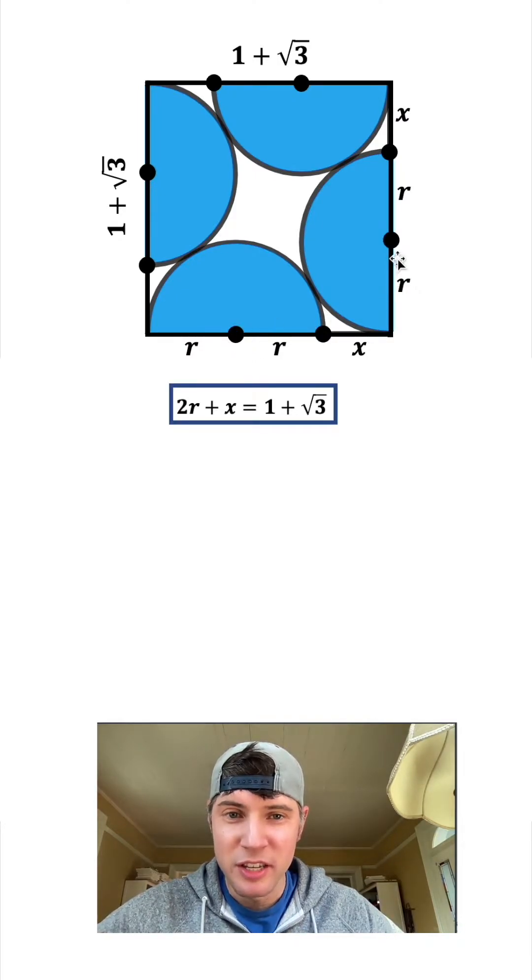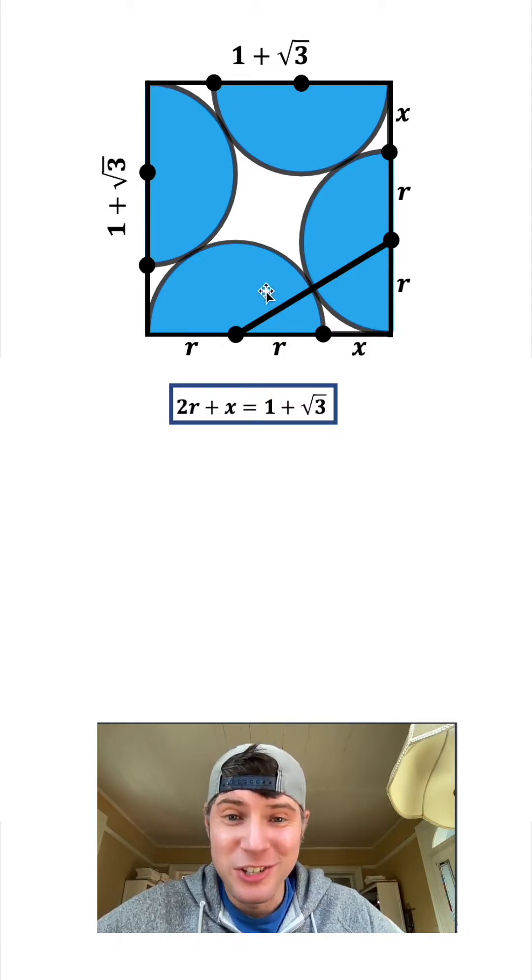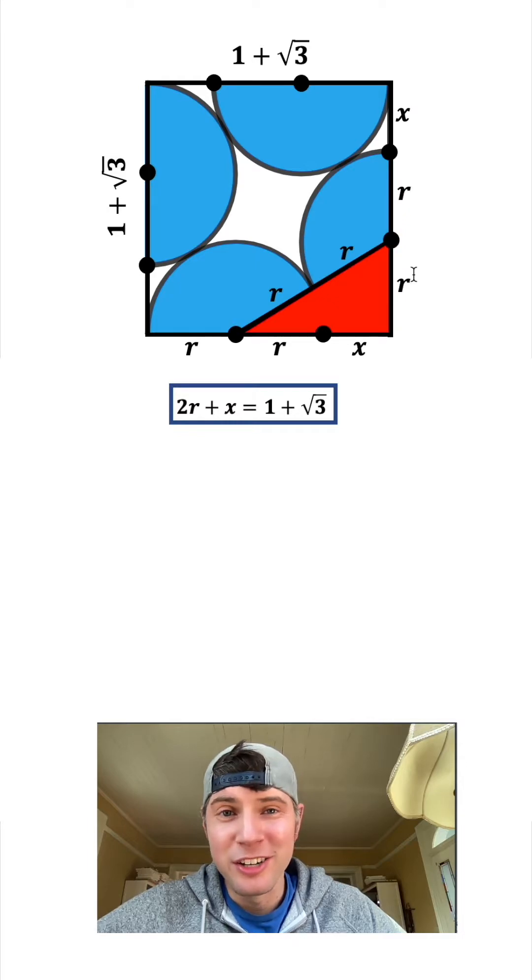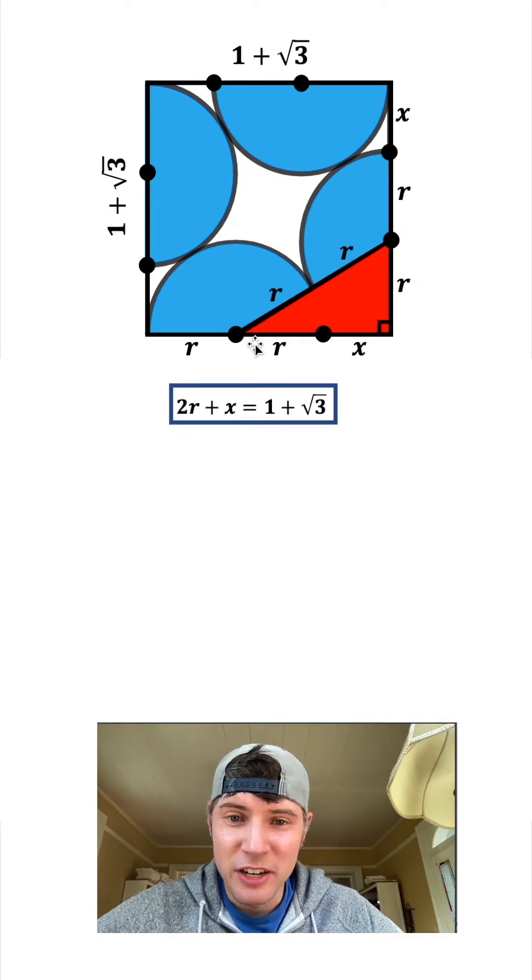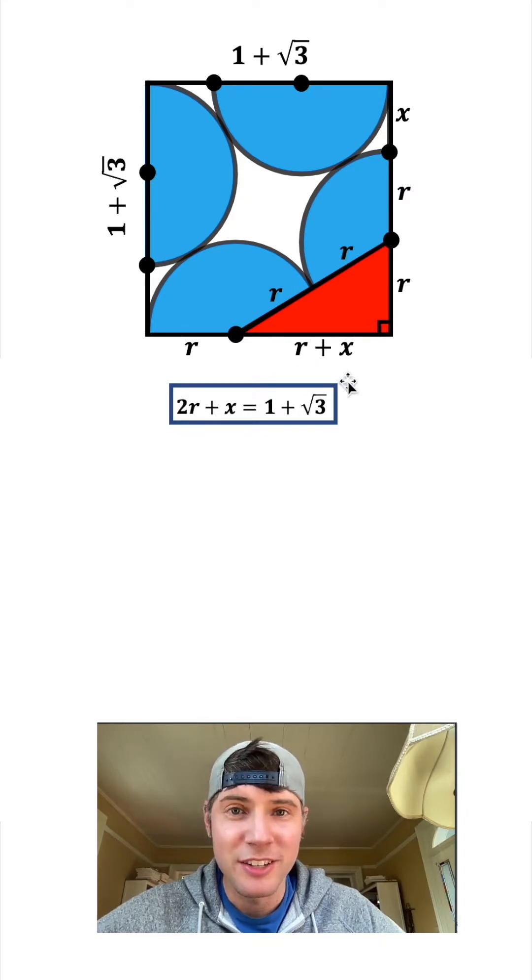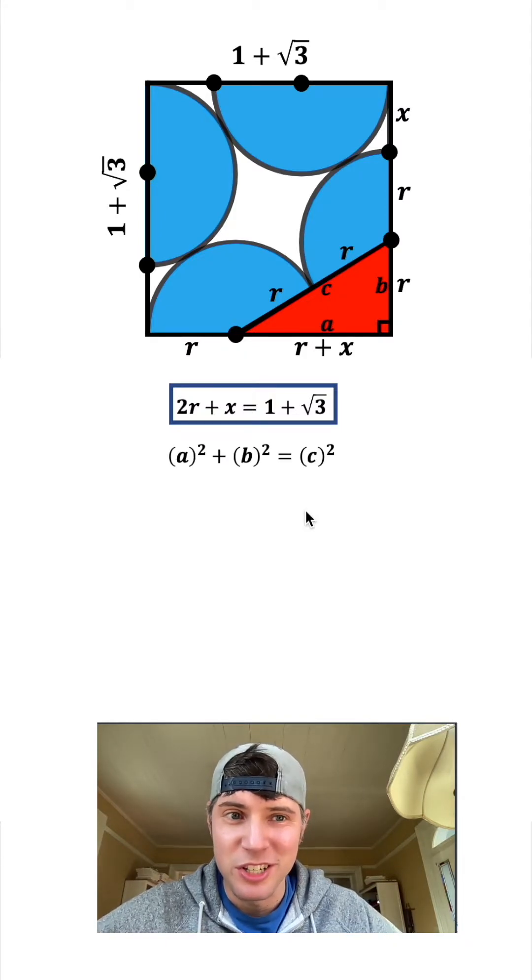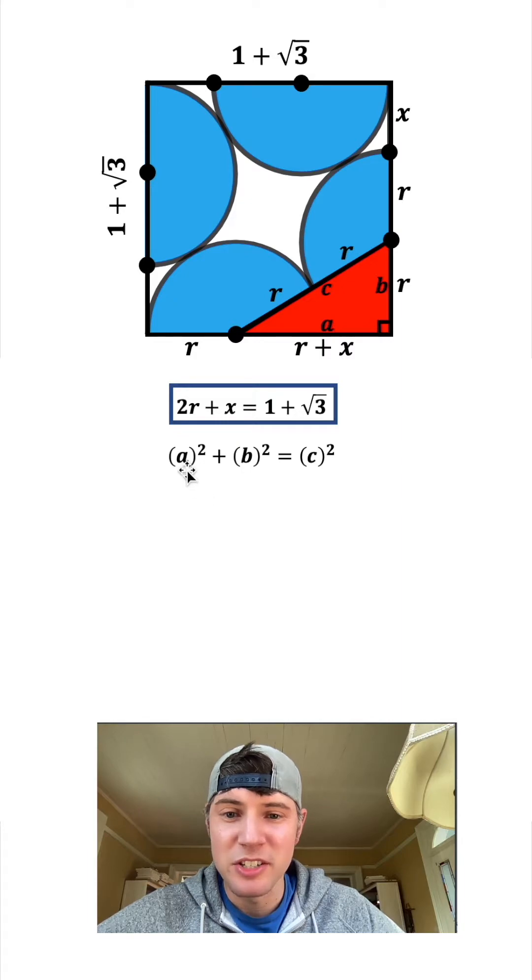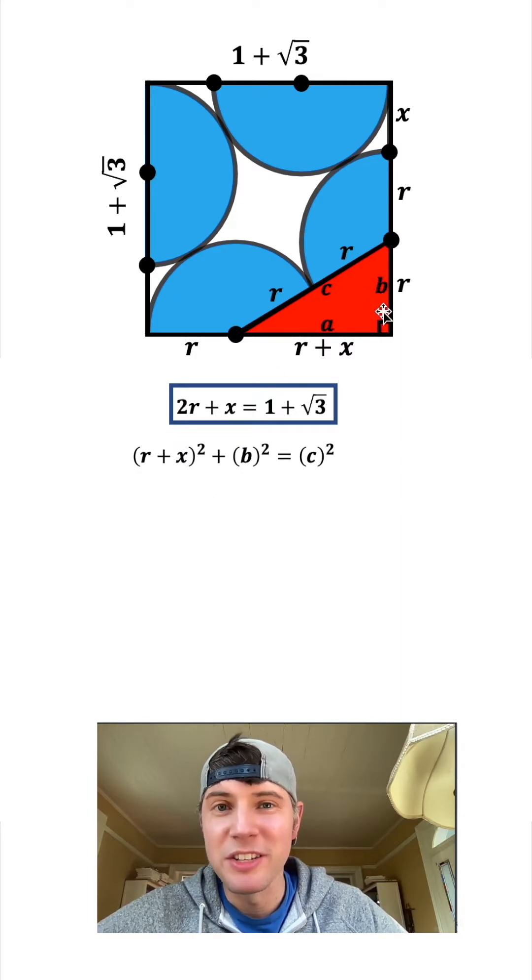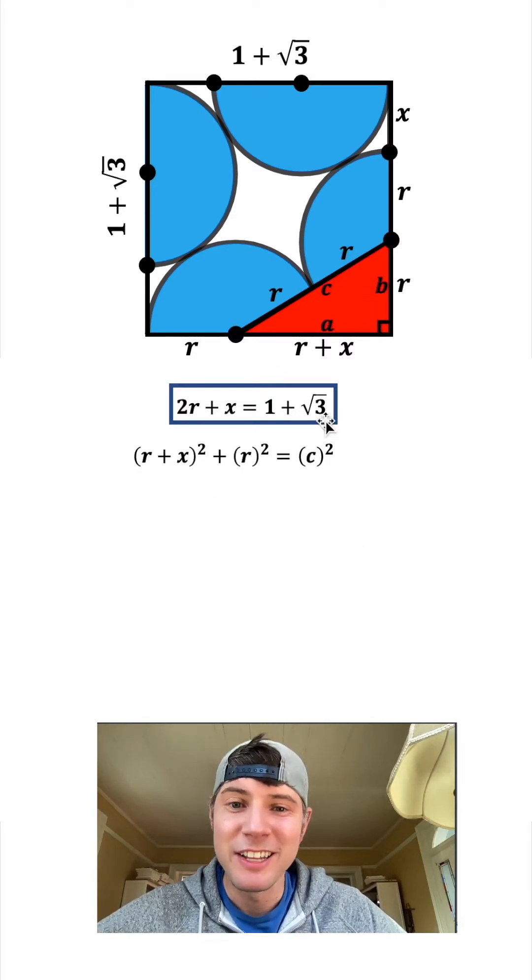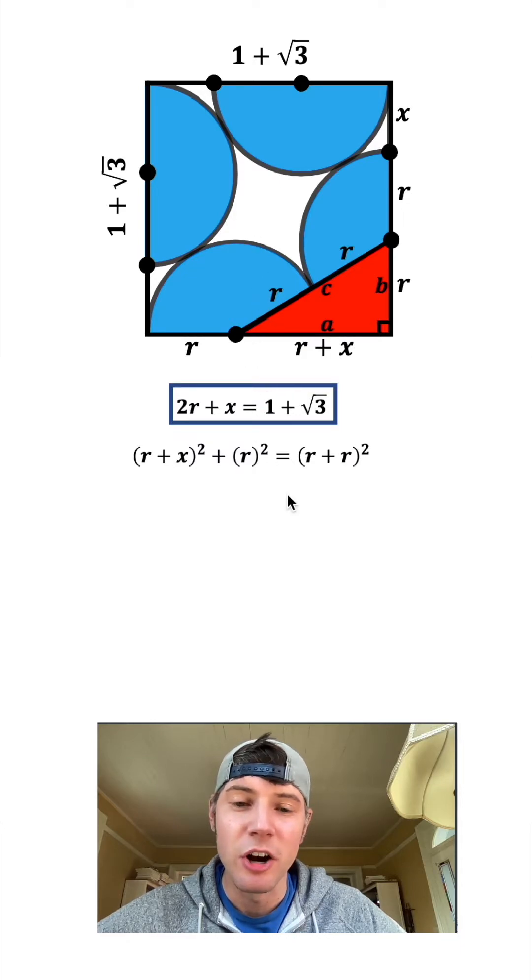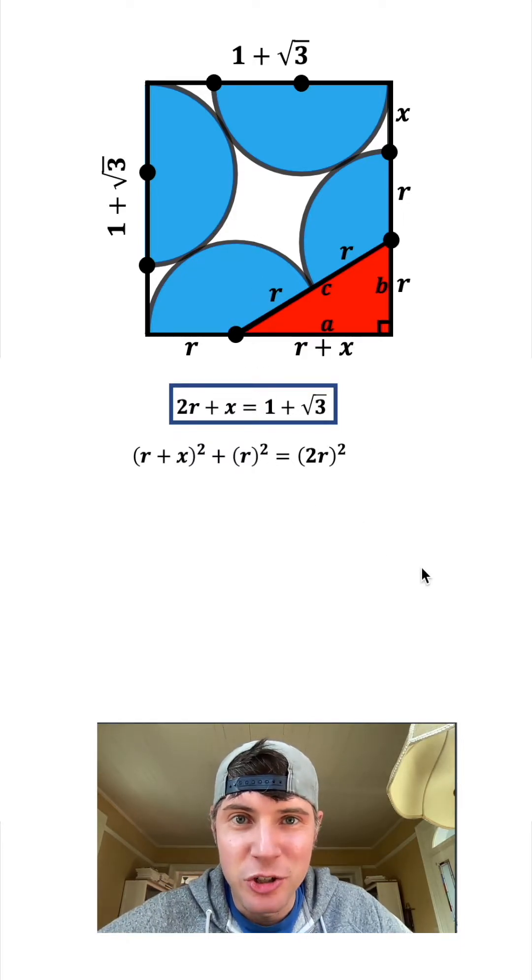If I connect this point to this point through both circles, this is a radius and this is a radius, forming a right triangle. The base is R plus X. Using the Pythagorean theorem, A squared plus B squared equals C squared. Substituting, we get (R plus X) squared plus R squared equals (2R) squared. Distributing the square gives us 4R squared.